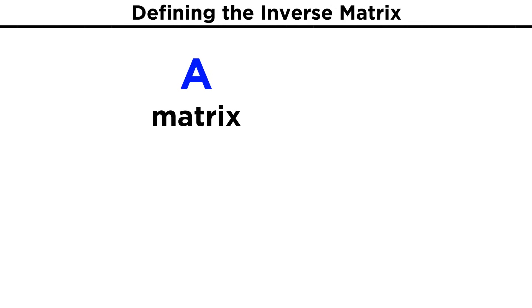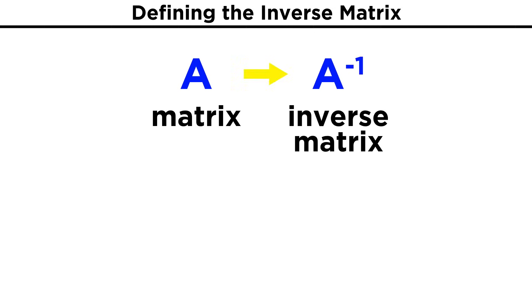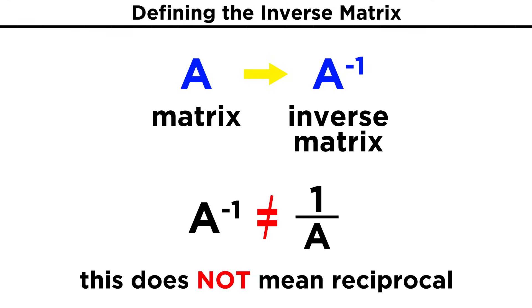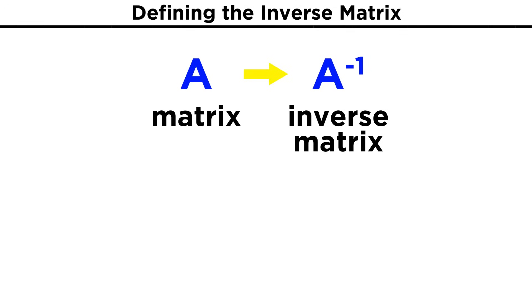Although a matrix is different from a function, when denoting the inverse of a matrix, we will use similar notation as we did for functions, where the inverse of matrix A will be A with a negative one in superscript, just like a function F and its inverse. We must realize that this is not an exponent — A inverse does not mean the reciprocal of A, or one over A, because there is no such thing as matrix division, but an inverse matrix is similar to the reciprocal of a number in another way.